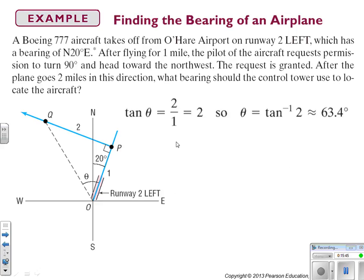If we look at the information we have, after flying one mile, this guy turns and flies two miles in this direction. And they turn 90 degrees. This angle is tangent, and which one is right next to my theta? One. So, this is adjacent, and this is opposite, so it's two over one. So, tangent of theta equals two over one, which is equal to two. Inverse tangent of two is equal to 63.4 degrees.